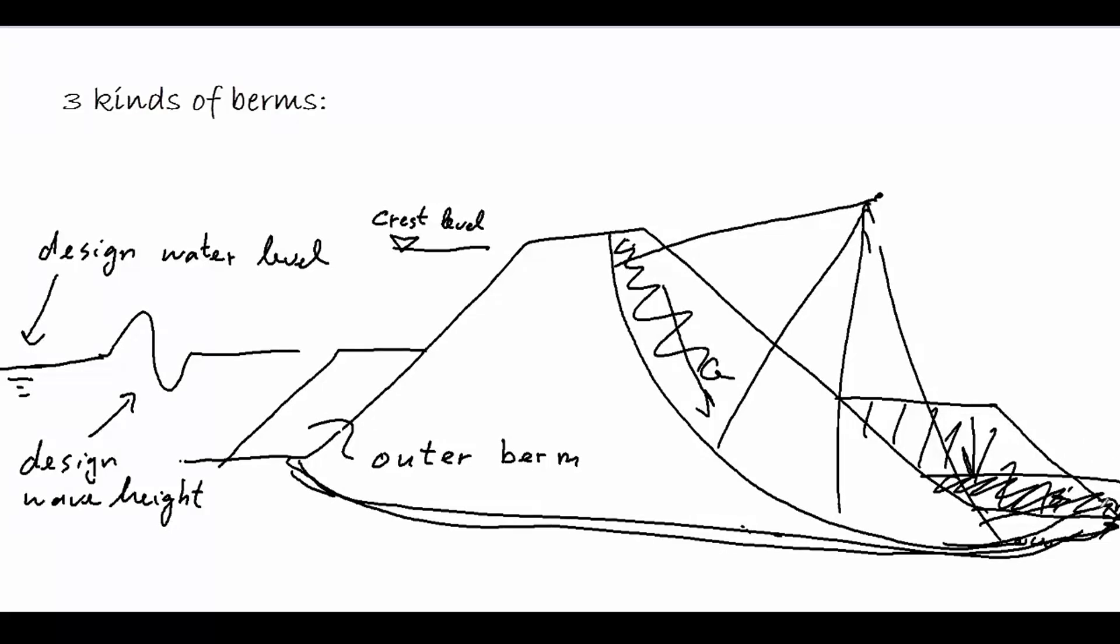So, actually, we have three kinds of berms in a dike. On sea dikes, we have a berm on the outer slope. And we can have a stability berm on the inner slope, or a much lower and longer piping berm also at the inner slope.